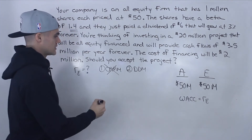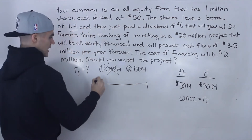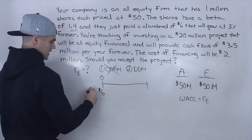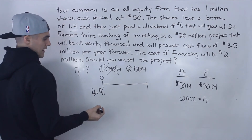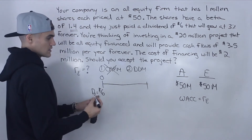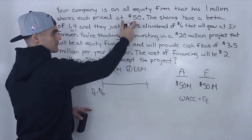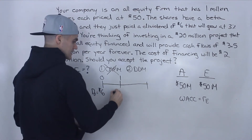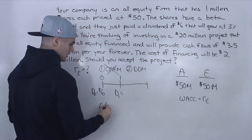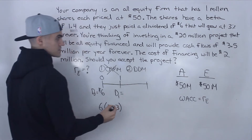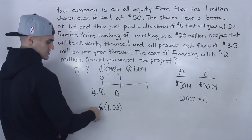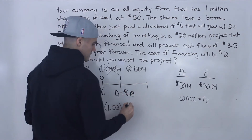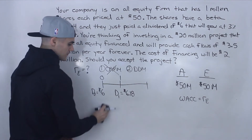Let's draw a timeline for the dividend discount model. At time zero, the company just paid a dividend of $6 — that's D0. Since it's already been paid, it's not part of the current share price of $50. We can use it to find the next dividend D1: multiply $6 by (1 + 0.03), which gives us $6.18. That is the dividend in one year, and the first cash flow of a growing perpetuity at 3% forever.